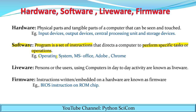Software cannot be seen but we can run it. For example, we have the operating system in our computers — for example, Windows. It is the operating system installed in your computer. Mobiles also have operating systems. The operating system cannot be seen but its functioning can be used. MS Office, Adobe, Chrome — these are all examples of software.